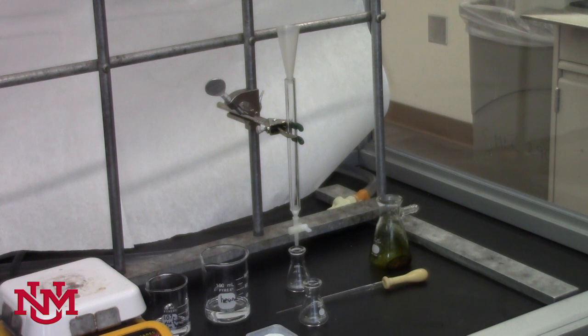Now it's time to prepare the column with the solid support that we'll use, similar to the TLC plate from last time. This time it is alumina. Last time it was silica on your TLC plate.